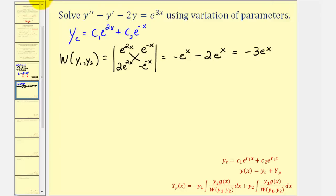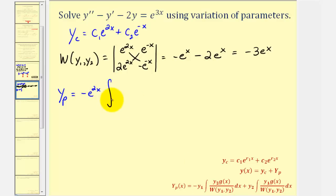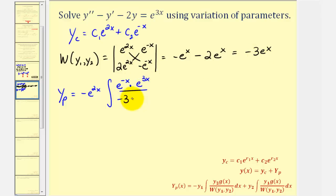This means y sub p is equal to negative y sub one, or negative e to the two x, times the integral of y sub two times g of x — y sub two is e to the negative x, times g of x which is e to the three x — divided by the Wronskian, which is negative three e to the x, dx.